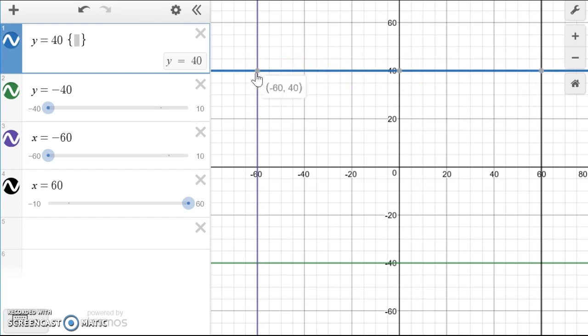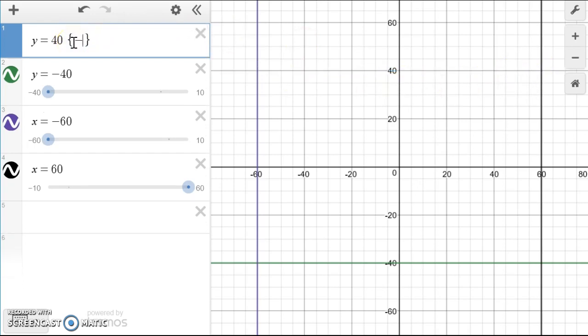We can't pick the y equals 40 value because that's already your equation. In order to limit your x value, you have to look at the first number, which is negative 60 and 60. So we have to put negative 60 and because this is the x value, the maximum value will be 60. Can you see that now the blue line has been shortened?